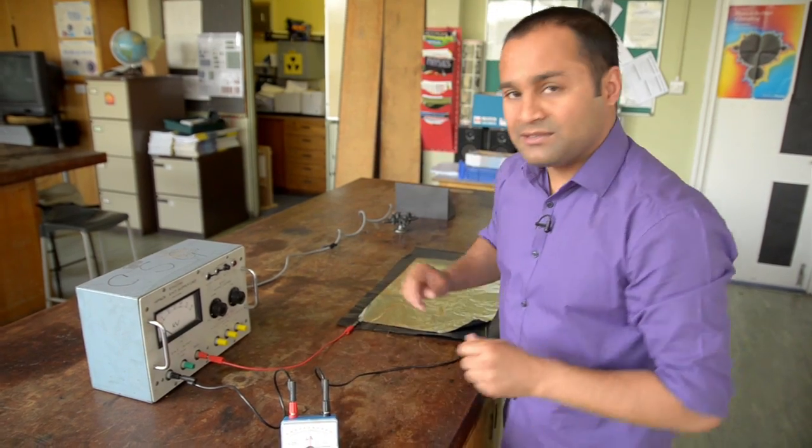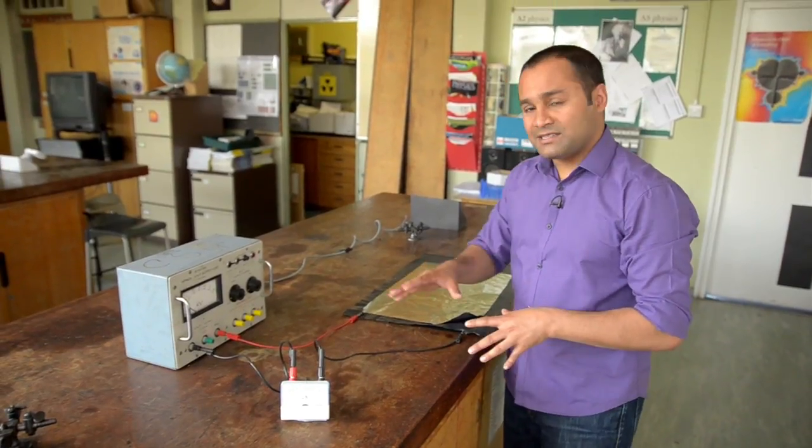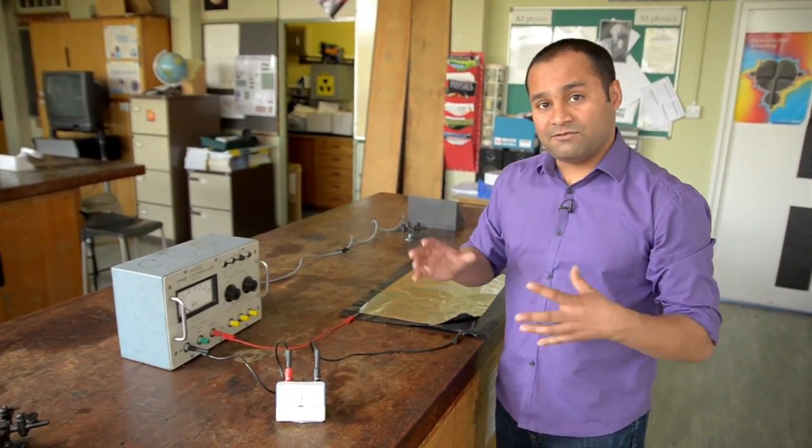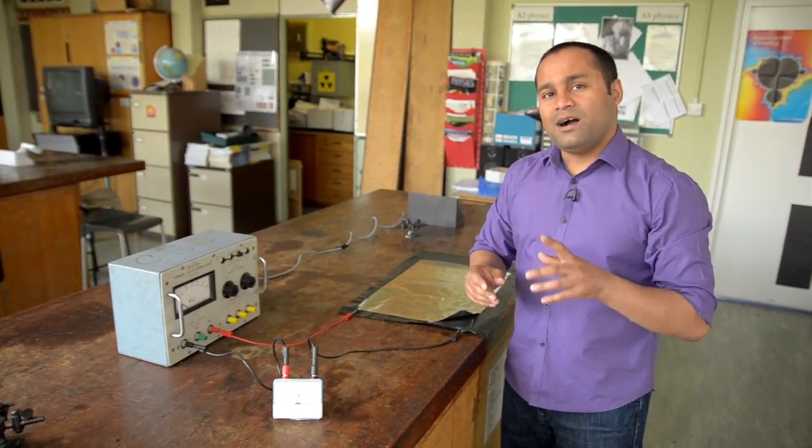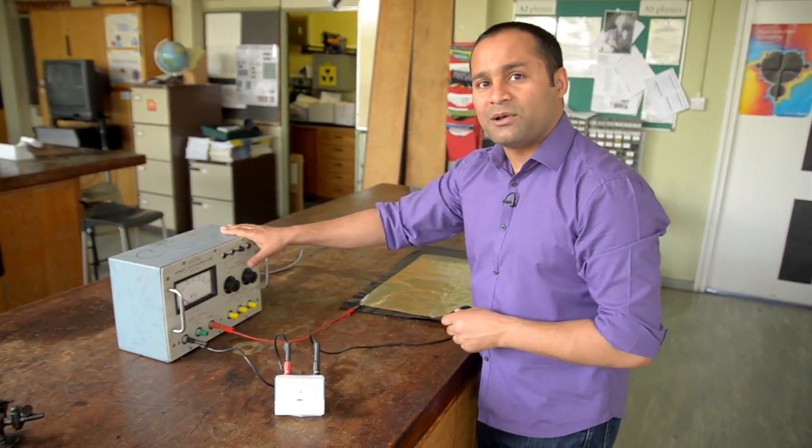So now it's ready to use in class. I usually begin by pointing out the various components and showing how it's connected and asking my students if we've got a complete circuit. I then ask them to predict what they're going to see on the ammeter when I turn the power supply on.